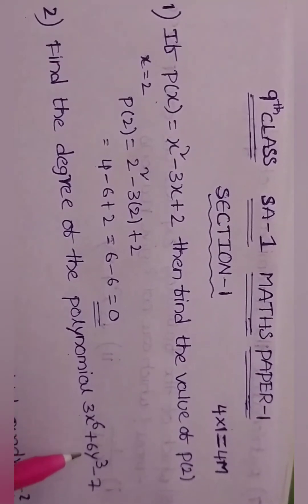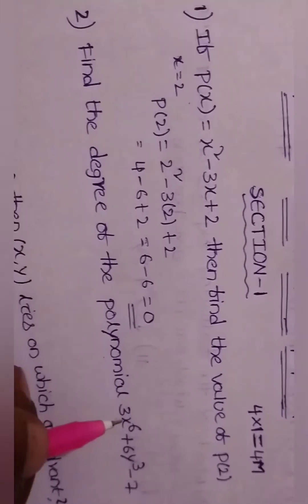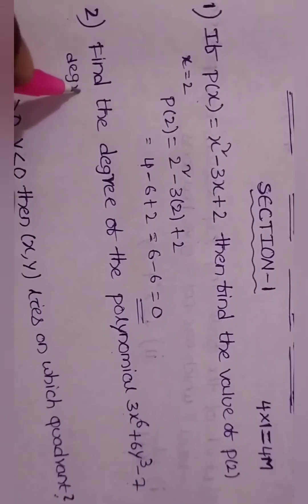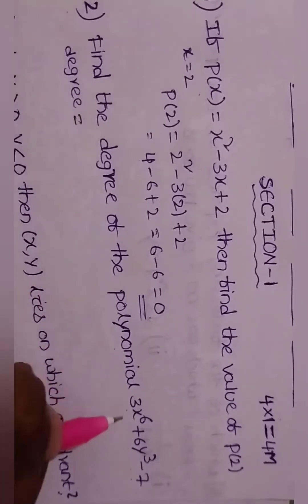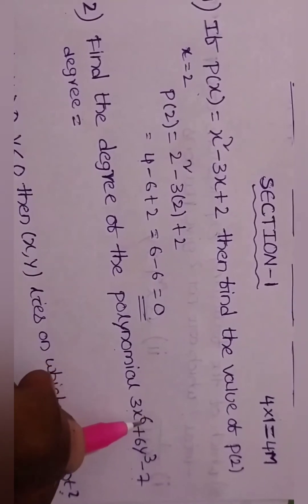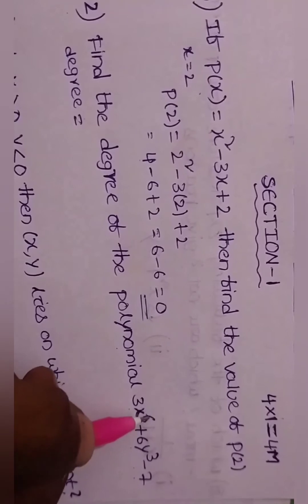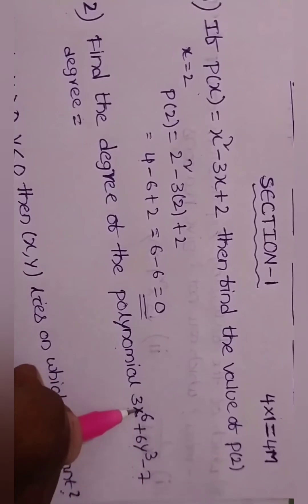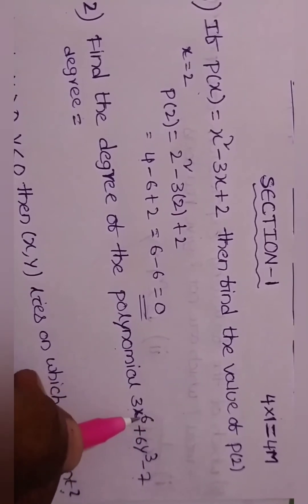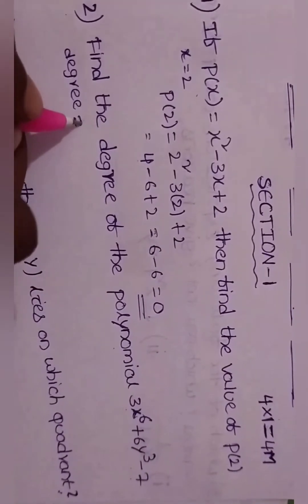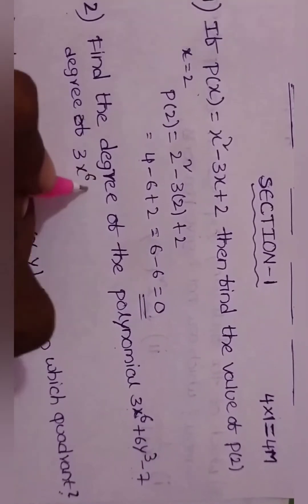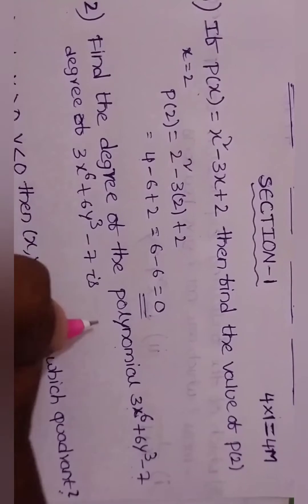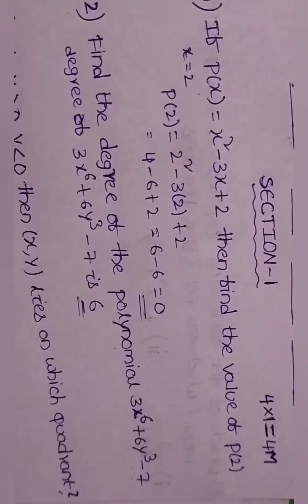Second question: find the degree of the polynomial 3x to the power 6 plus 6y cubed minus 7. The highest exponent is 6, so the degree of the polynomial is 6.